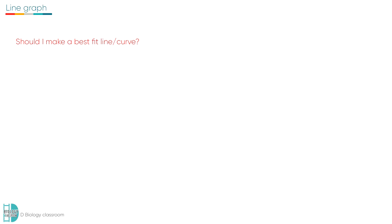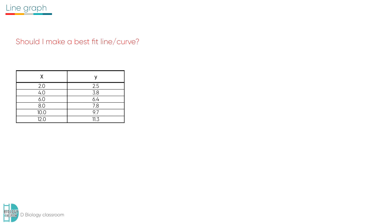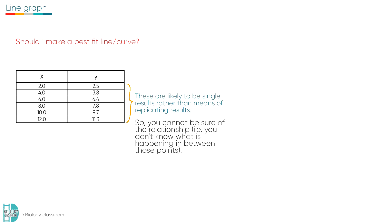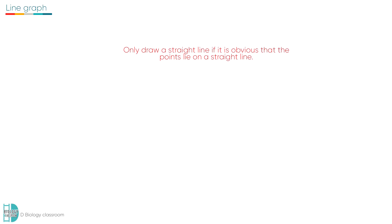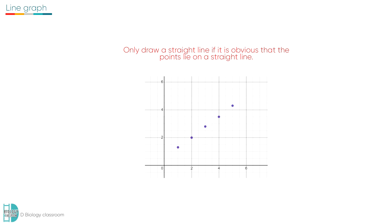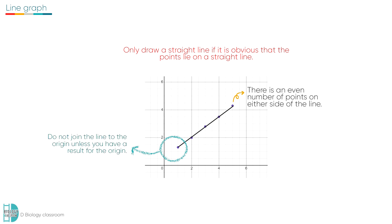Another commonly asked question is: should you make a best fit line or curve? In the practical examination, you may only have 5 or 6 results, which are likely to be single results rather than means. Therefore, you cannot be sure of the relationship and should not draw a straight line or curve — instead, draw straight lines between the points to indicate uncertainty. Only draw a straight line if it is obvious that the points lie on one, ensuring an even number of points on either side. Only join the line to the origin if you have a result at the origin; otherwise, start at the first plotted point and do not continue past the last plotted point.